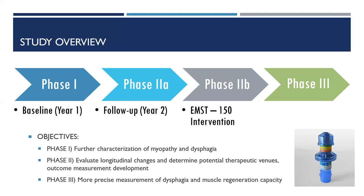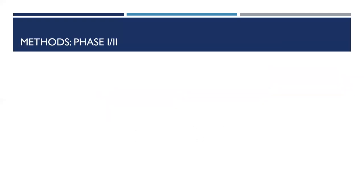Following the observational phase, patients underwent a five-week training regimen using an expiratory muscle strength trainer, shown in the bottom right. This device has been used in other disease populations to improve cough force, which can improve an individual's ability to tolerate aspiration and therefore improve swallow safety. Our objective was to evaluate the feasibility of using this device and any impact it might have on swallowing and breathing function. We are now in the midst of phase three, which aims to further characterize myopathy and dysphagia using more precise measurement tools and to look at the capacity of muscles to regenerate.